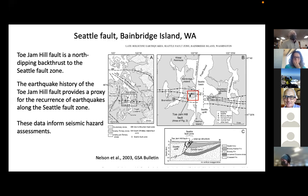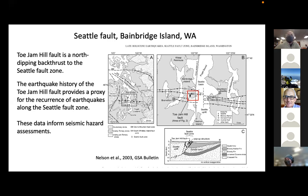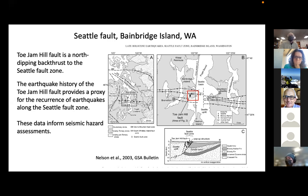The Toe Jam Hill fault is what it became known as — it's a north-dipping back thrust to the Seattle fault zone. You can see that in the cross-section at the bottom for the Toe Jam Hill fault. What we're working on is actually a back thrust to the main thrust. The earthquake history on this fault is kind of a proxy for return earthquakes along the Seattle fault zone.